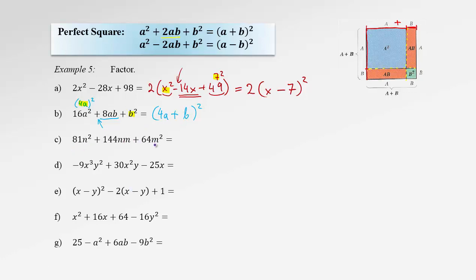In the next example, there's no common factor, and the outside terms are perfect squares: 9n squared and 8m squared. We check if the middle term is double the product of 9n and 8m: 9 times 8 is 72, doubled is 144nm. Yes, it is a perfect square. Therefore, we're squaring 9n and 8m connected with the middle sign, which is plus: (9n plus 8m) squared.